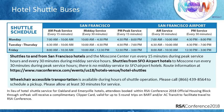We have shuttles to and from our San Francisco hotels in our housing block to Moscone Center. For hotels in San Francisco, they run every 15 minutes during peak service hours and every 30 minutes during midday. For airport hotels, buses run every 30 minutes during peak hours with no midday service. If you're staying in Oakland or Emeryville and booked through our housing bureau through OnPeak, you'll receive a complimentary Clipper card valid for up to five round trips on BART or AC Transit. Wheelchair accessible transportation is also available — allow 30 minutes for service.